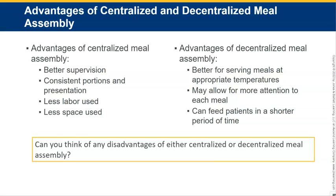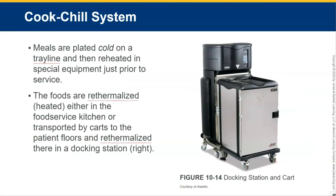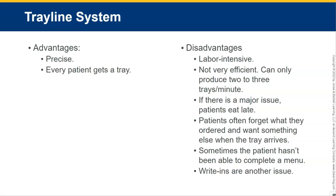For the cook-chill system, meals are plated cold on a tray line and then reheated in special equipment just prior to service. The foods are re-thermalized — meaning heated — either in the food service kitchen or transported by carts to the patient floors and re-thermalized there in a docking station. Advantages of the tray line system: it's precise — every patient gets a tray. Disadvantages: it's labor intensive, not very efficient, can only produce two to three trays per minute. If there's a major issue, patients eat late; patients often forget what they ordered and want something else when the tray arrives, and sometimes patients haven't completed a menu.